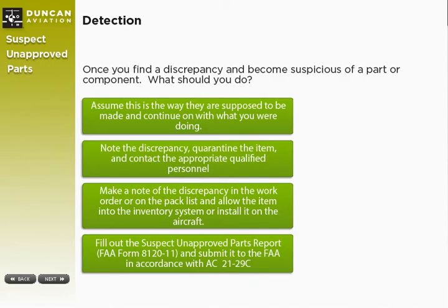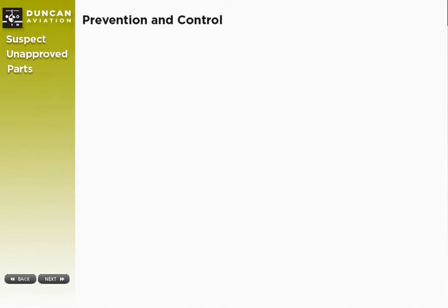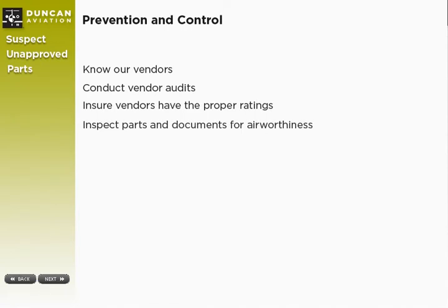Now let's take a quick look at what to do once you find a discrepancy and become suspicious of a part or a component. Now that we have reviewed some of the indicators of an unapproved part or a suspect unapproved part, and what we can do to prevent and control these items, we need to look at some of the prevention and control measures. It's important we know our vendors and audit them on a regular basis. In doing so, Duncan Aviation verifies our vendors have the proper ratings. Duncan Aviation's receiving auditor program plays a significant role in the detection of unapproved parts or suspect unapproved parts by inspecting the parts and documents for proper airworthiness approvals. Once a discrepancy is found, it is important the part or component is segregated and quarantined until a proper course of action is determined.